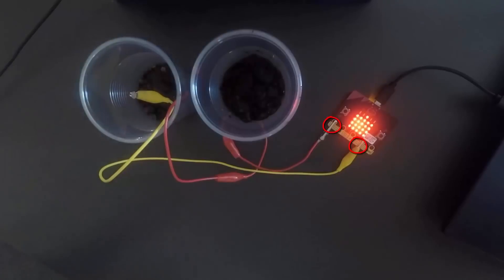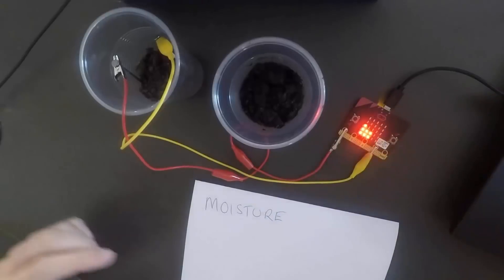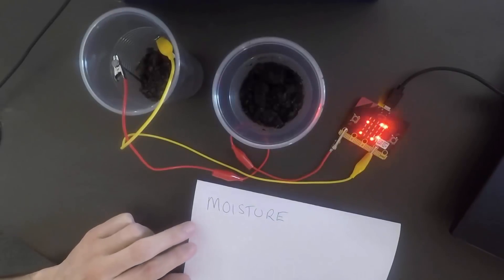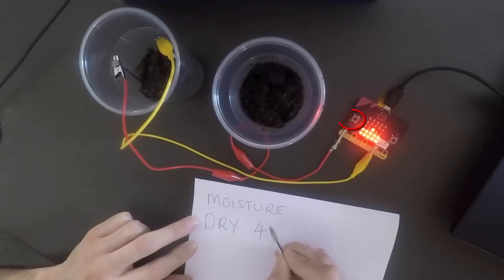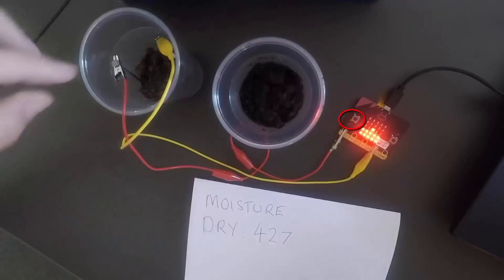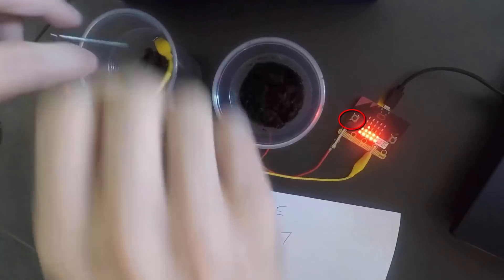Once you've got those pins in the right alignment, we then have to put our probes into the soil. You can see here that after I've pressed the button on the BBC micro:bit, it has given me a result of 427.